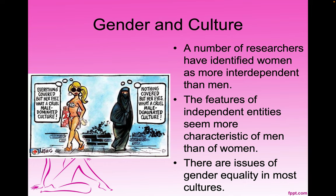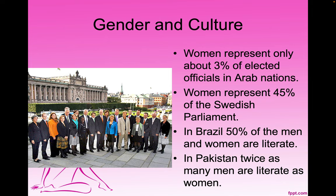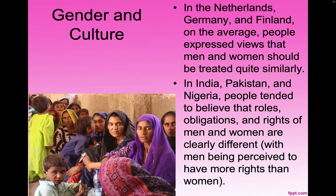A number of researchers have identified women as more interdependent than men. The features of independent entities seem more characteristic of men than of women. There are issues of gender equality in most cultures. Women represent only about 3% of elected officials in Arab nations, while women represent 45% of the Swedish parliament. In Pakistan, twice as many men are literate as women. In the Netherlands, Germany, and Finland, people express views that men and women should be treated quite similarly, while in India, Pakistan, and Nigeria, people tended to believe that men have more rights than women.